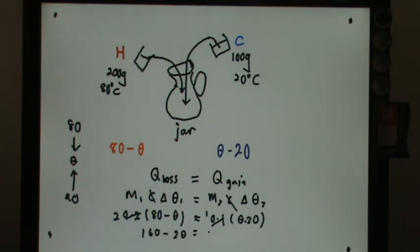Equals to theta minus 20, so that will be 3 theta. If you know how to calculate it fast, 3 theta equals 180, so you'll be able to get 60 degrees Celsius as your final thermal equilibrium temperature.